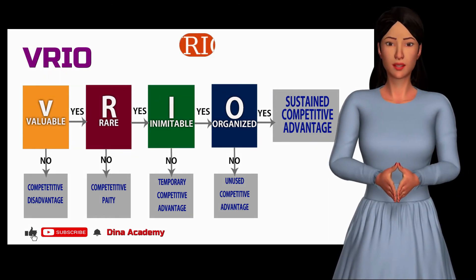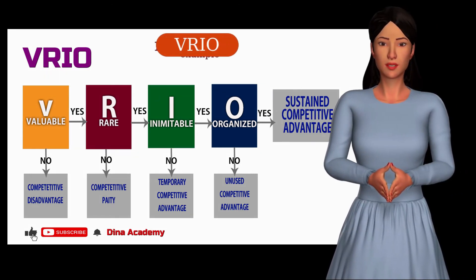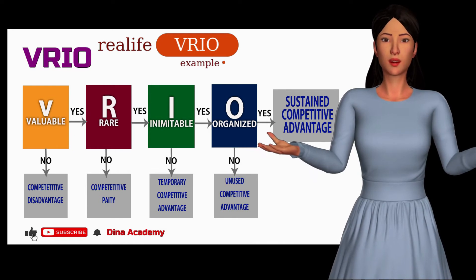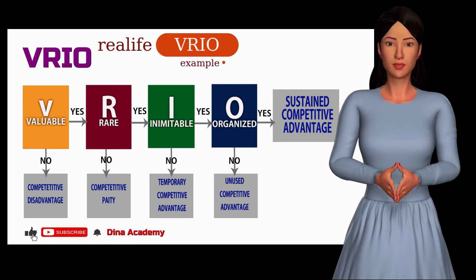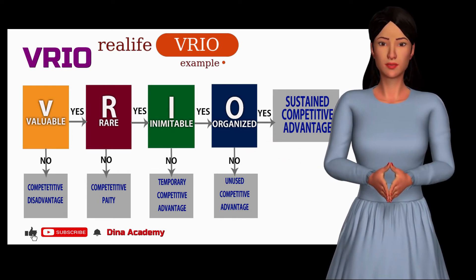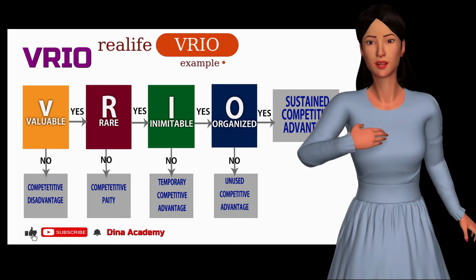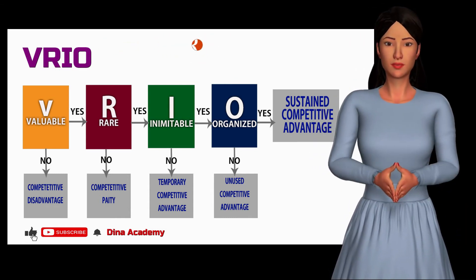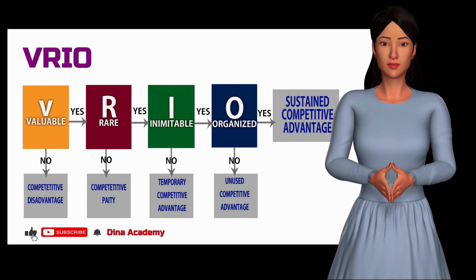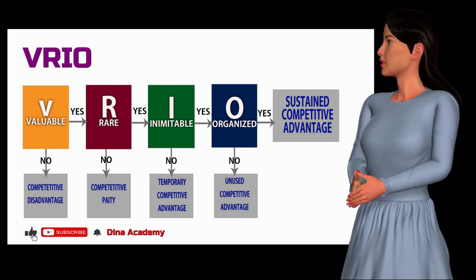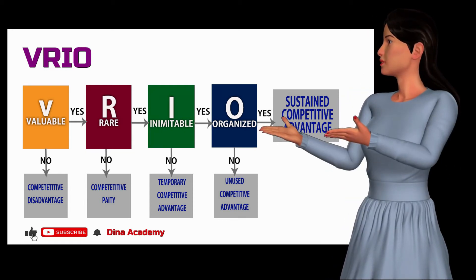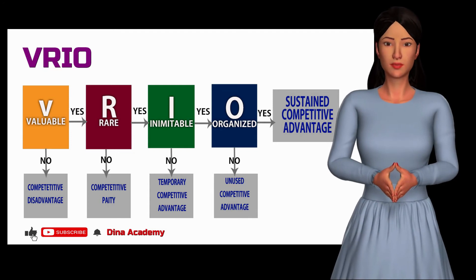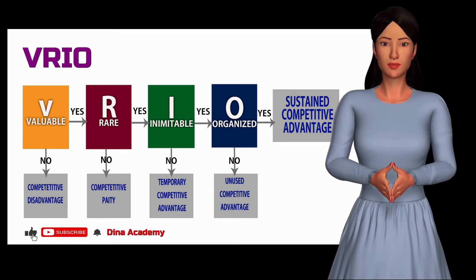A real-life VRIO framework example is Google. There's no doubt that Google is one of the most powerful companies in the world, and its success arguably stems from a sustained competitive advantage in human capital management. If we were to break down Google's VRIO framework from the HR perspective, it might look something like this.